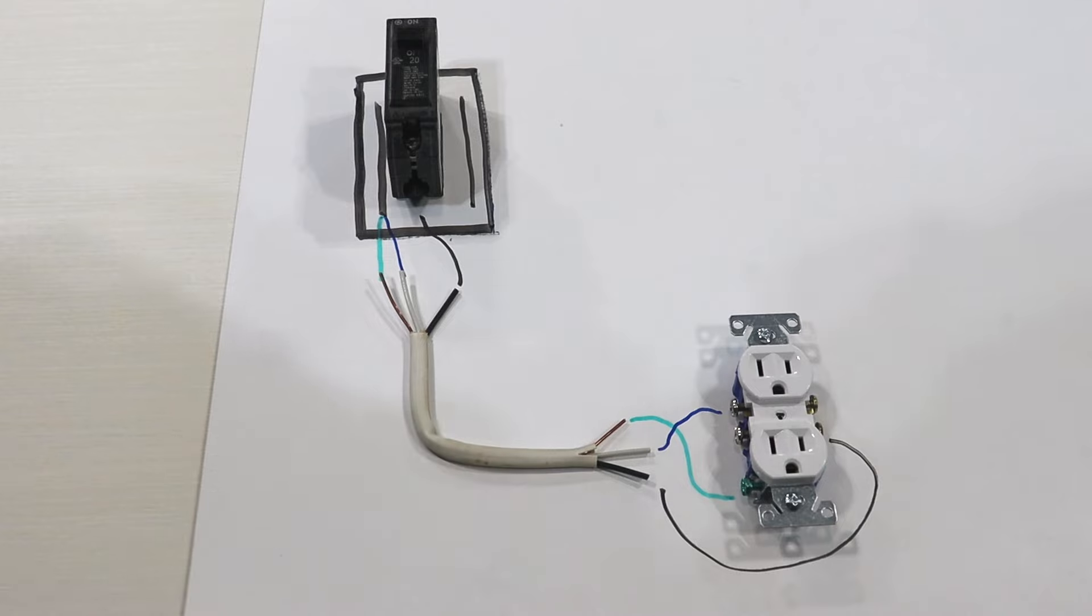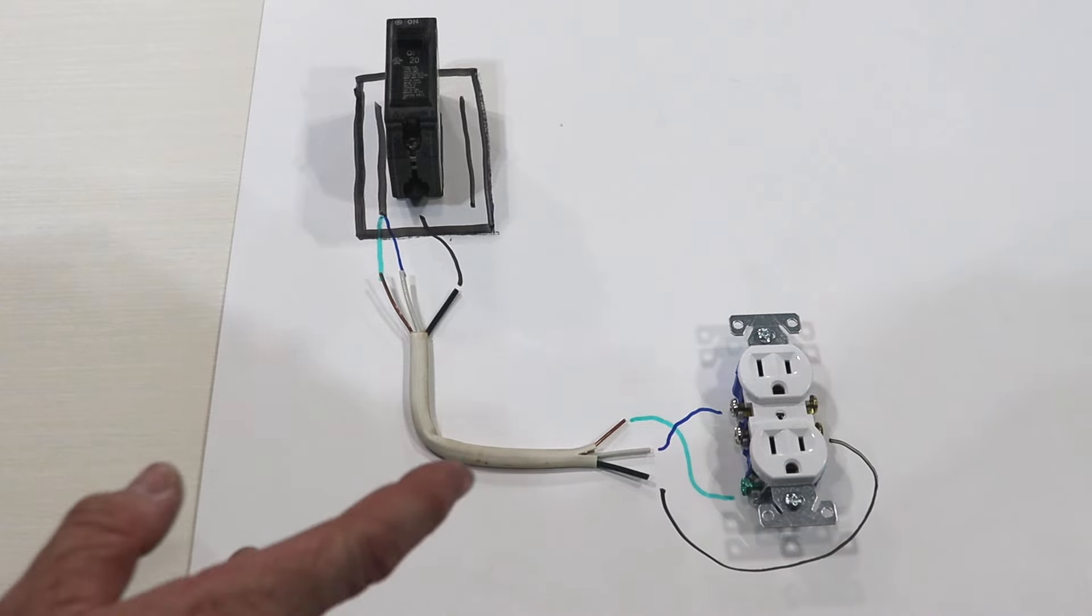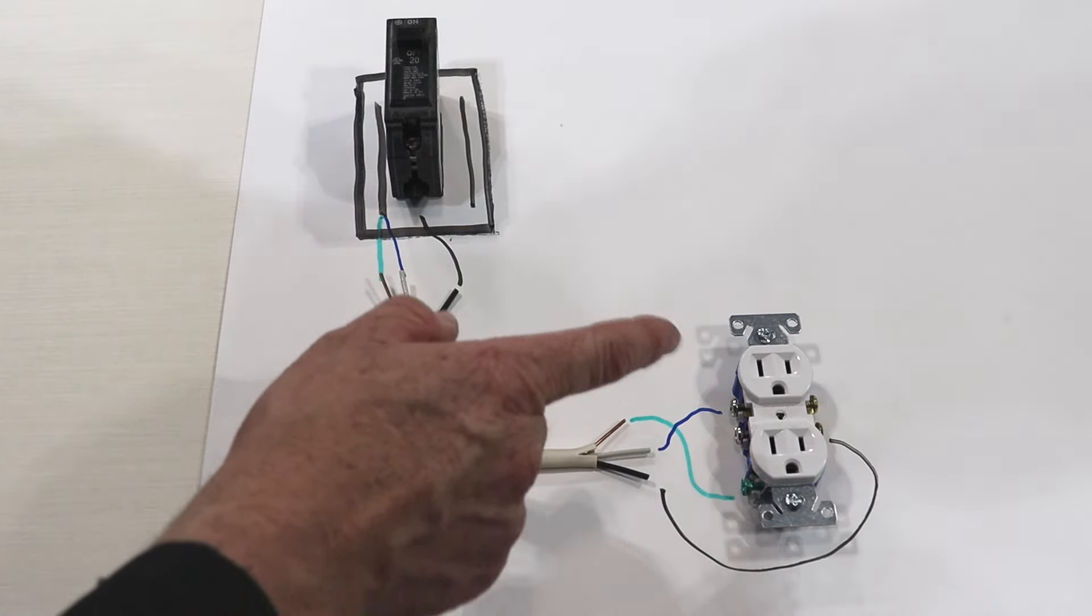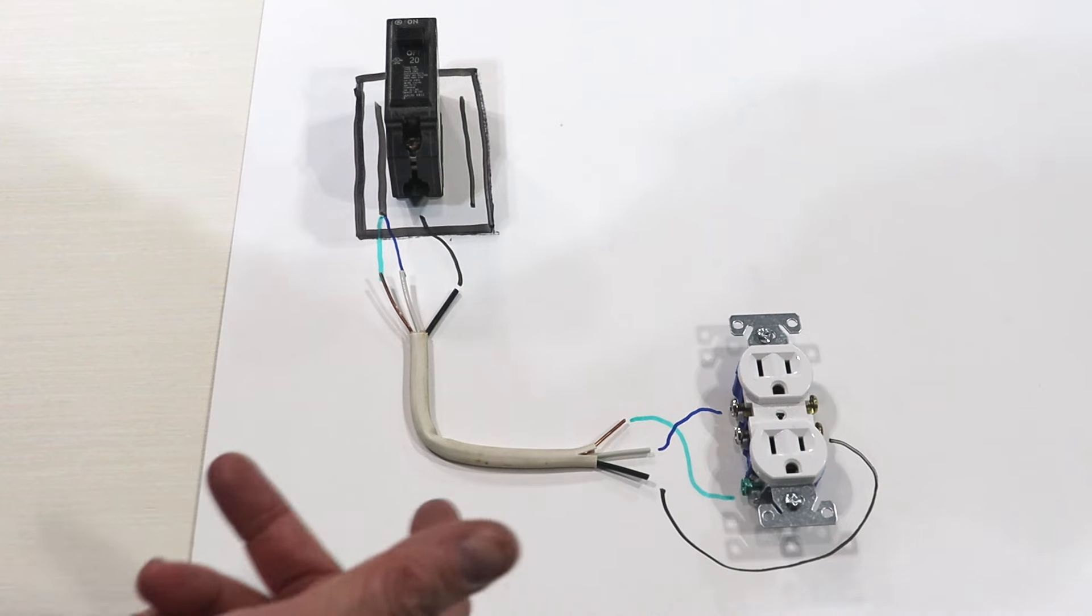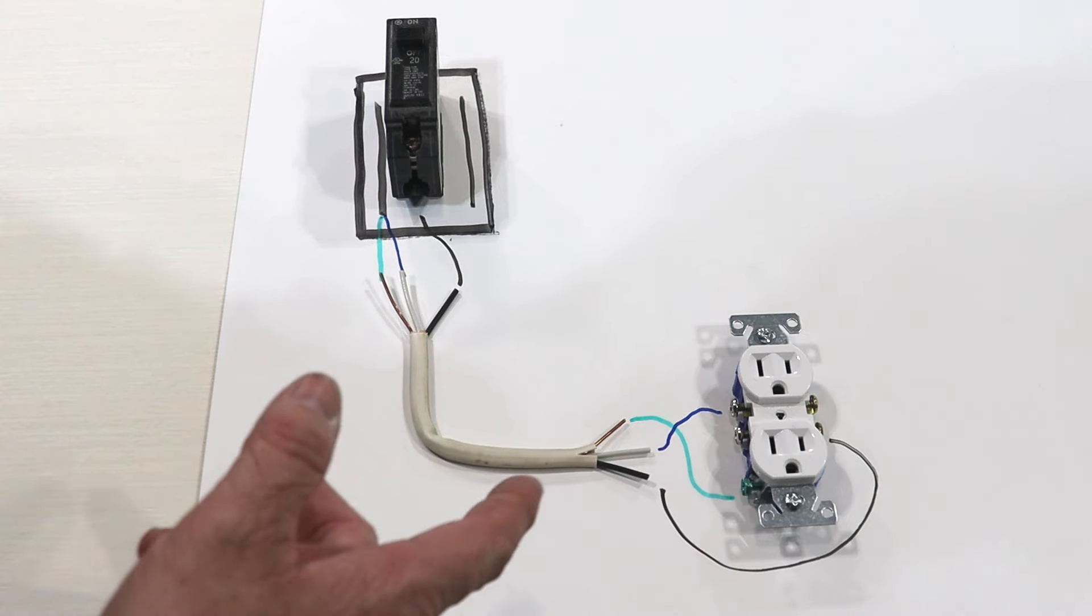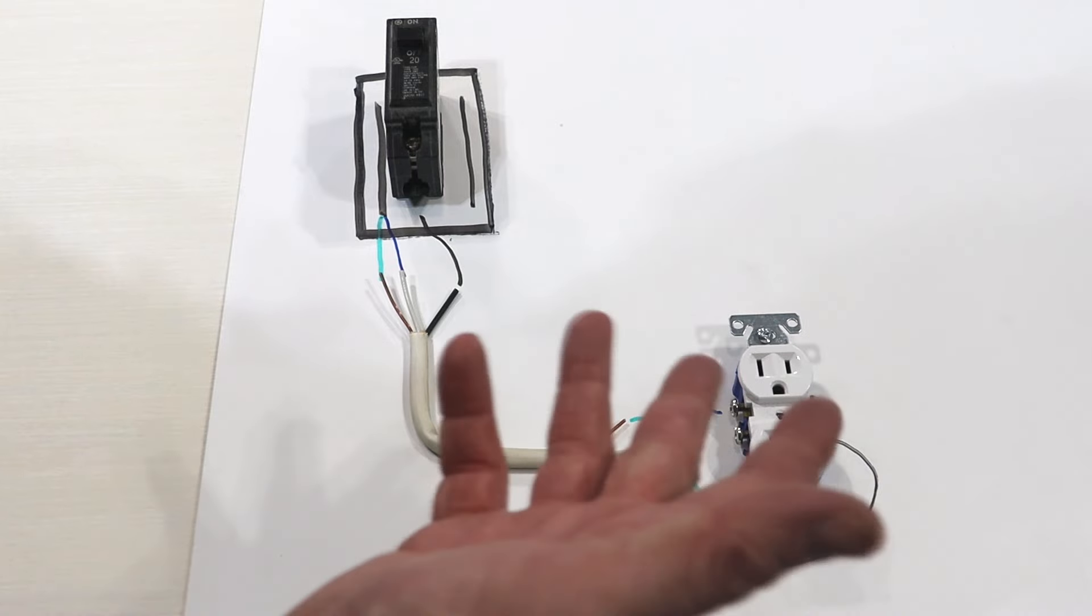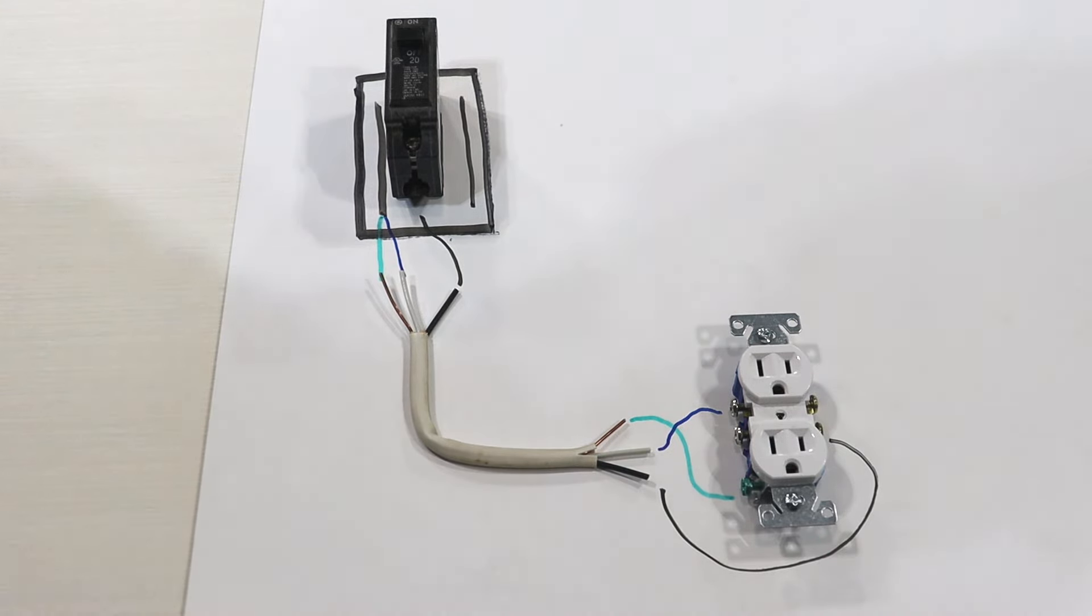But what if we don't want that outlet on all the time? How do we make it so this outlet will only be hot to run a lamp or something like that? We walk in to the room, we have a lamp plugged in, and we flip a switch and the lamp comes on. So how do we make that circuit work?